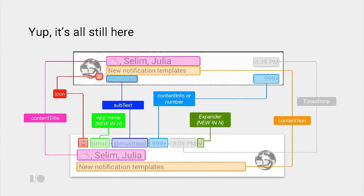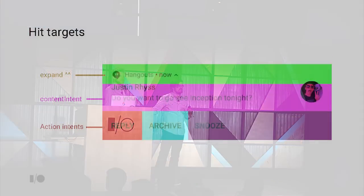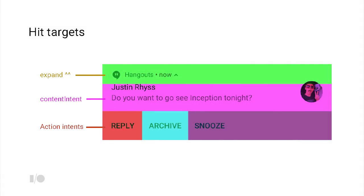All of the old information is still here, and the templates have just moved around to a new place. So if you're already using the notification builder APIs, we'll take care of all that for you and move it into new spots. There's also a note on hit targets: even though that expand indicator is really small, the hit target for it is really big. You touch anywhere on that top row and you expand the whole notification — finally, after three years, a button you can touch.